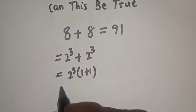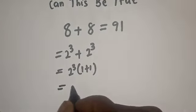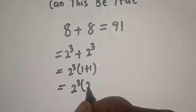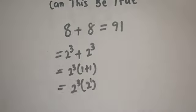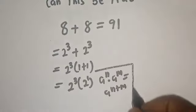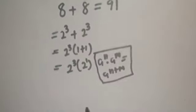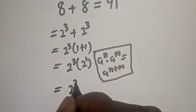This is equal to 2 raised to power 3 bracket 1 plus 1 is 2, also 2 raised to power 1. And then this is equal to 2 raised to power 3 plus 1.